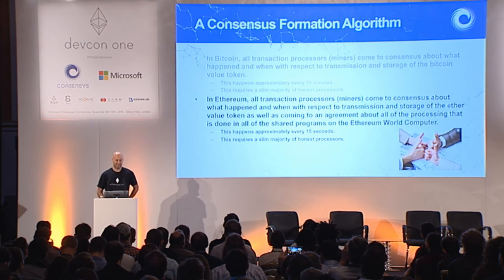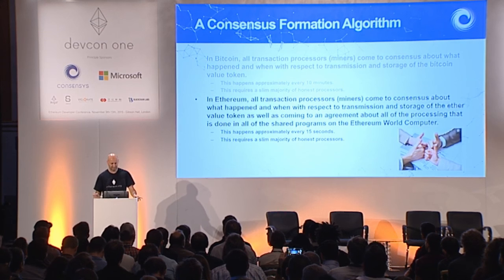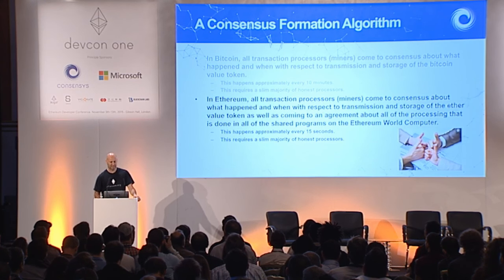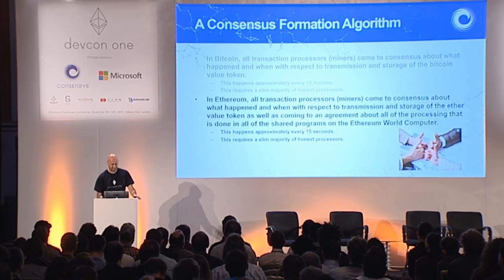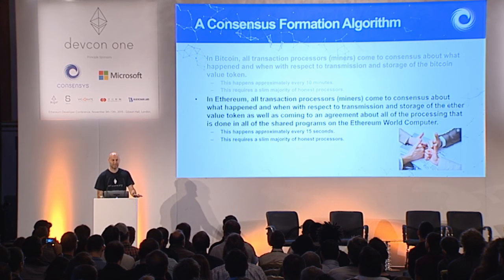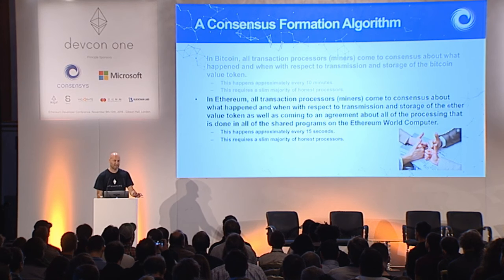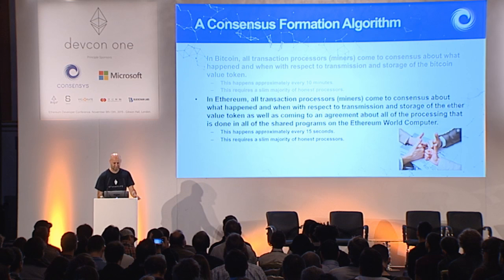Fourth is the consensus formation algorithm. In Ethereum, all transaction processors come to consensus about what happened and when with respect to transmission and storage of the Ether value token, as well as coming to an agreement about all the processing that occurs on all the shared programs on the world computer.